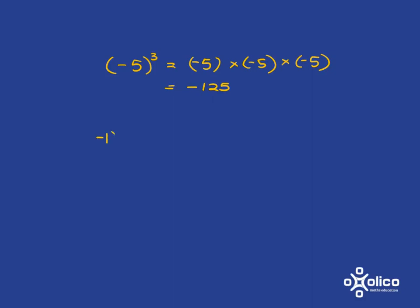What about if we had negative one to the power of six? That's going to be six negative ones all multiplied together. Negative times negative is positive, negative times negative is positive, negative times negative is positive — so in total you're going to be positive. And one times one times one is always just one, so we're going to get positive one.